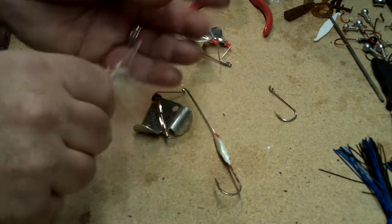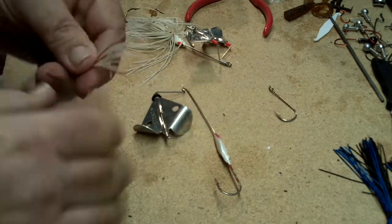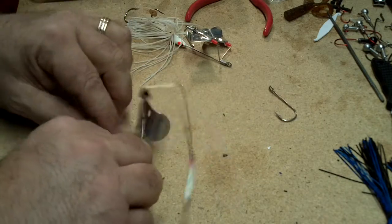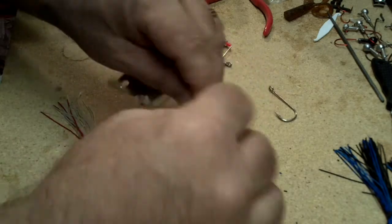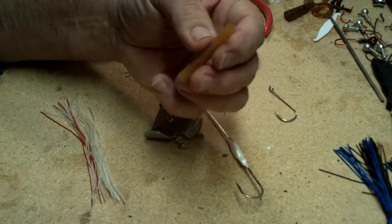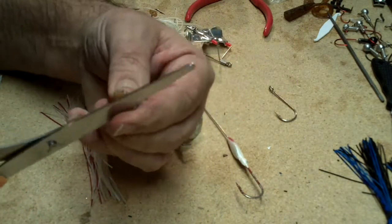Now I want to try to keep this skirt together and as even as possible. Then take a little piece of rubber tubing and we're going to cut just about a quarter inch piece here.